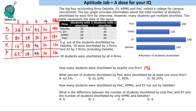The second question: what percent of students shortlisted by PWC were shortlisted by at least one more firm? PWC had 160 students total, and 62 were shortlisted only by PWC. So the remaining 98 out of 160 were shortlisted by at least one more firm. Converting to percentage: 98 divided by 160 equals 5/8, which is 61.25%.